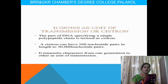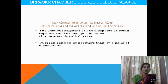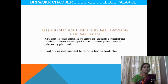The gene as a unit of transformation, or cistron: a part of DNA that specifies a single polypeptide chain, useful for the transformation of different characters, with a length of approximately 30,000 nucleotide pairs. Recon is the smallest segment of DNA capable of being separated and exchanging different characters, consisting of not more than two pairs of nucleotides. Muton, the unit of mutation, is the smallest unit of genetic material that can mutate — some sequences in a gene are changed to a different codon, producing a different phenotypic expression.